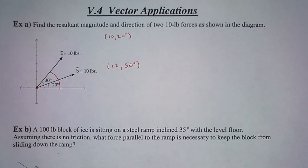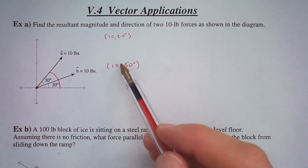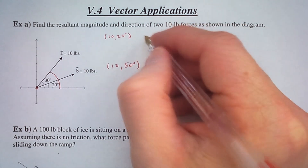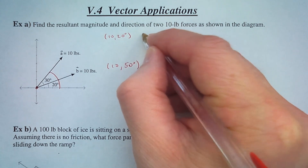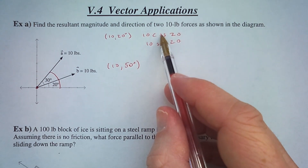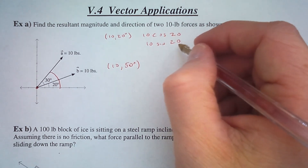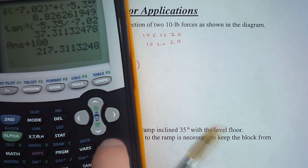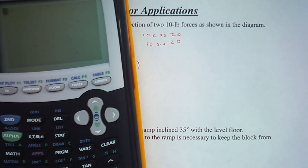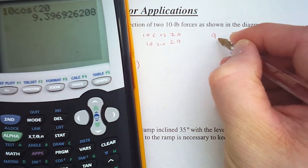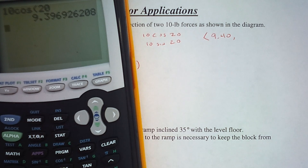To find the resulting force, we need to add these two vectors together. In order to do that, we have to change them first into component form. For component form, we have 10 cosine 20 degrees and 10 sine 20 degrees. Cosine gets us an x and sine gets us a y, which is something we learned when we talked about trigonometry. So 10 cosine 20 — checking that we are in degree mode — is 9.40, so the x component is 9.40. And the y component, 10 sine 20, is 3.42.